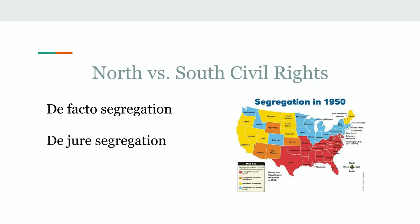In the North, segregation was done by communities, but in the South it was going to be easier to confront segregation through things such as boycotts, sit-ins, and marches. Also in the North, we saw the emergence of the Black Power Movement, which began to alienate the general public and hurt Martin Luther King's civil disobedience push during that period. In the South, Martin Luther King was able to use nonviolent actions to show unjust laws as far as civil rights went.